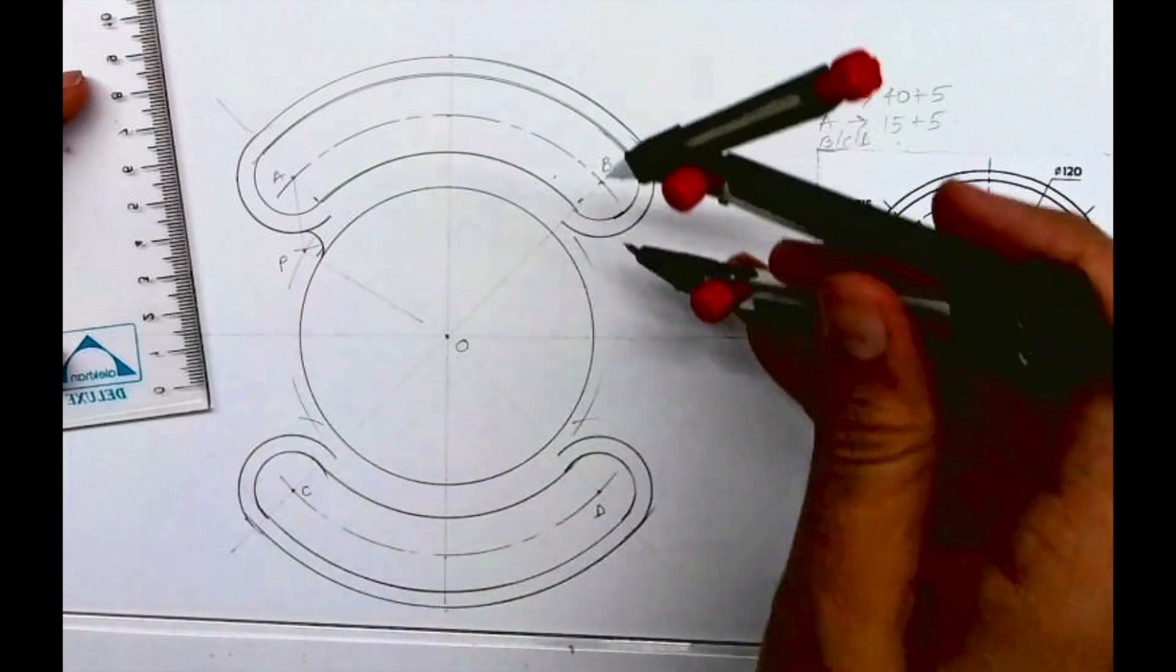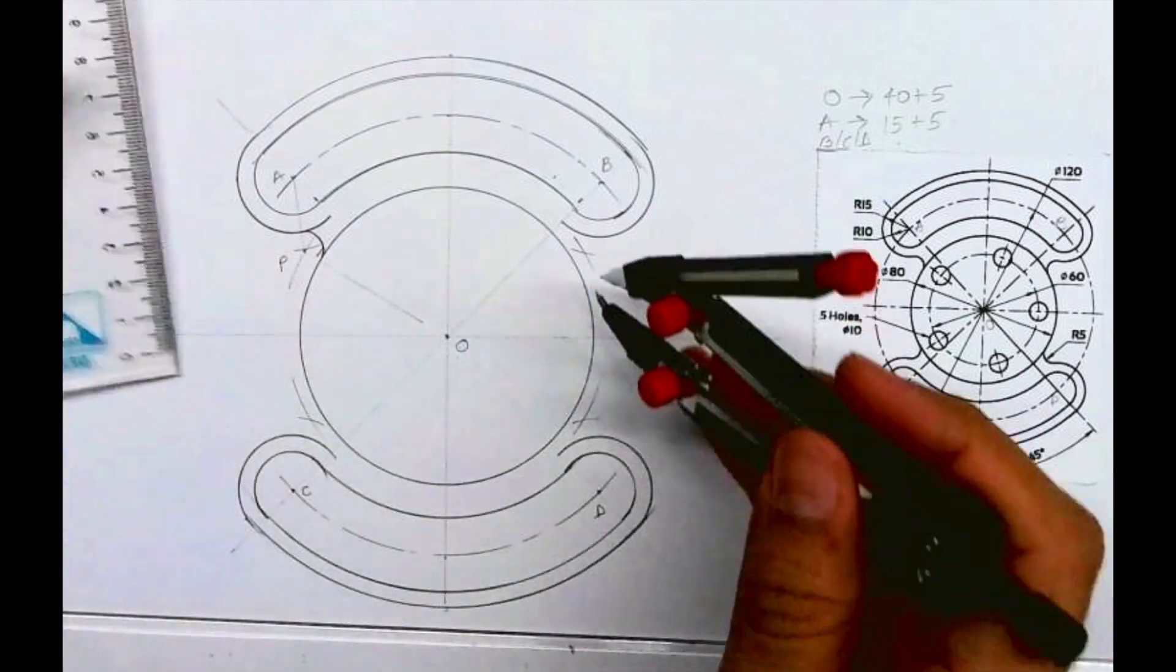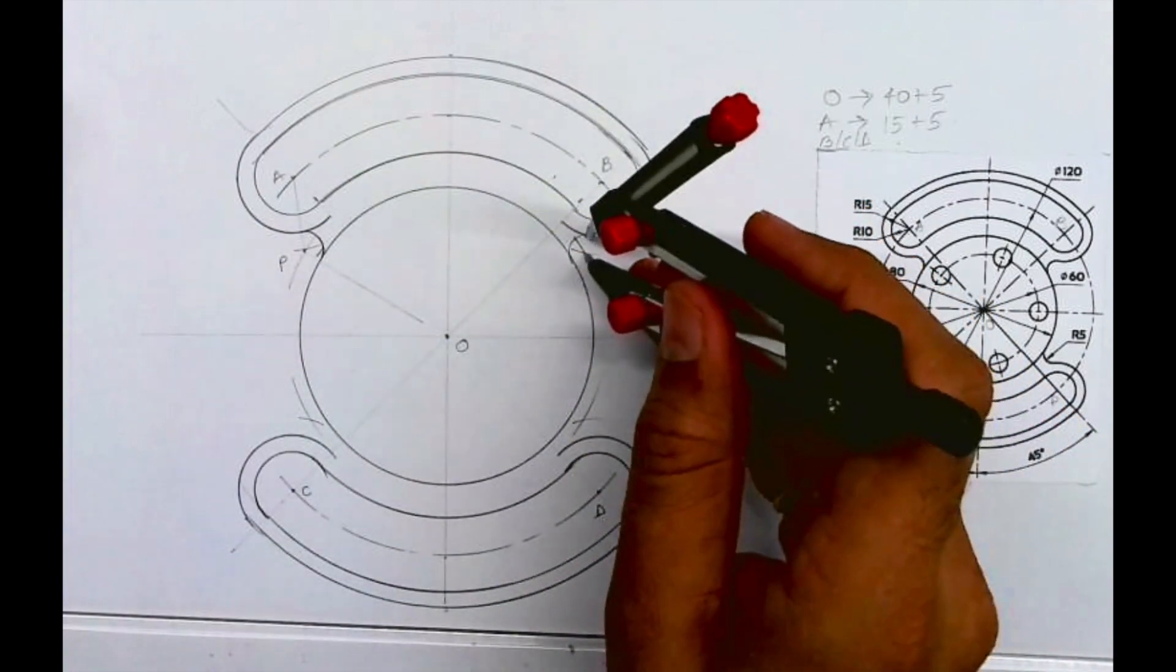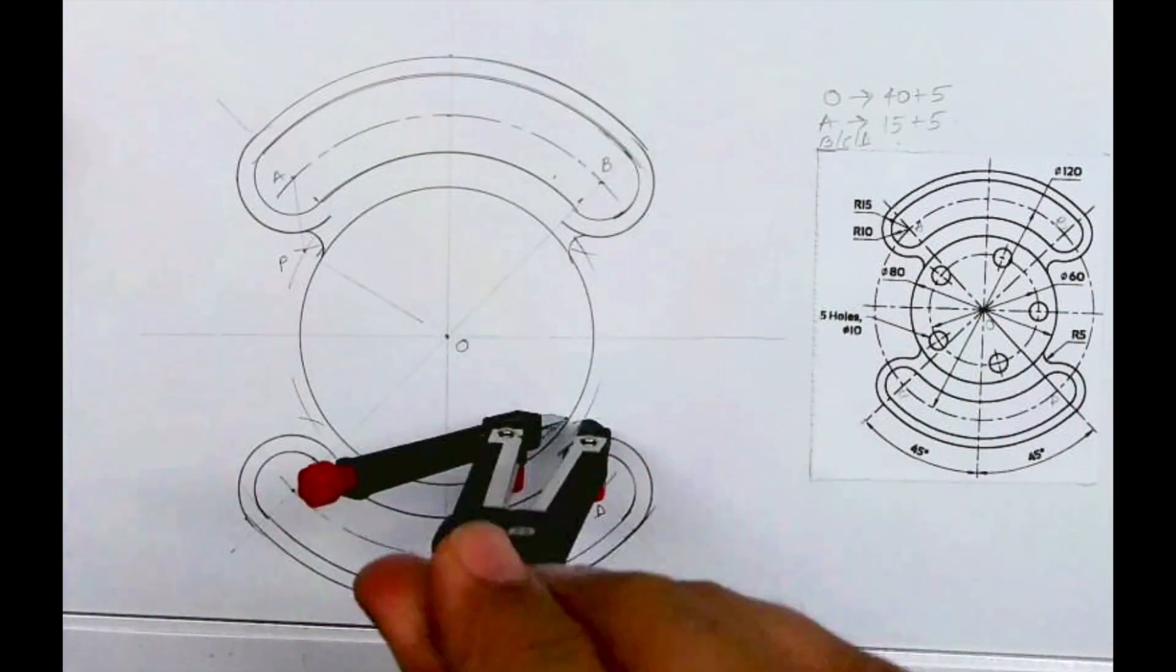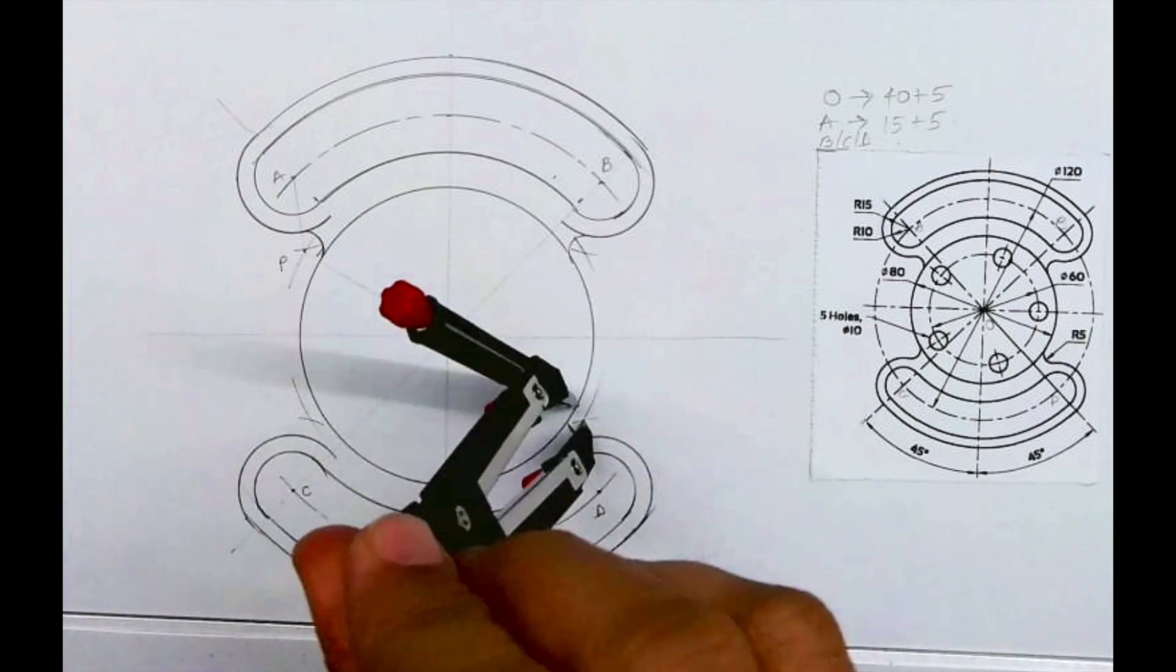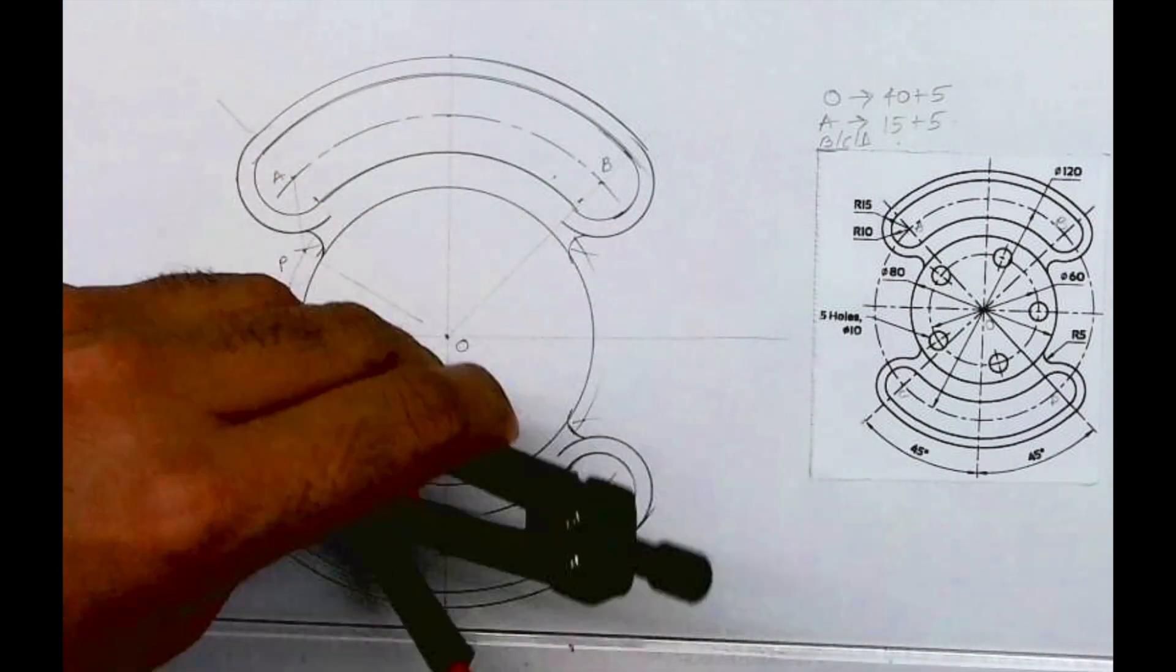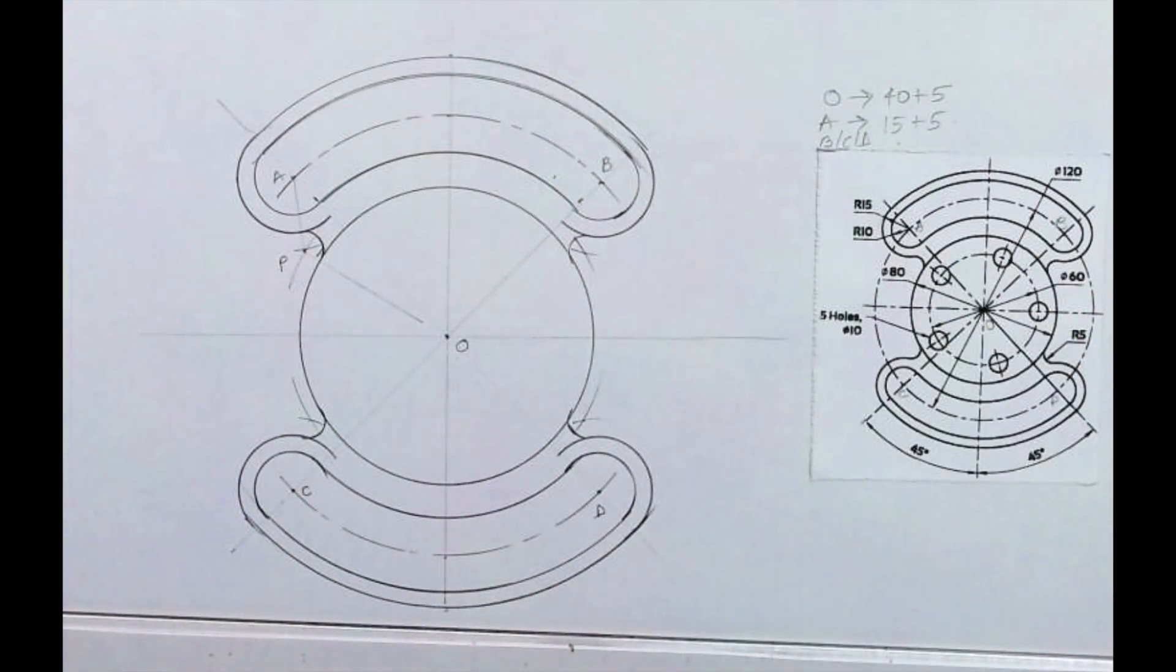I can do the same thing from B, C, and D. I can cut 20 and from O 45. Wherever they intersect, from all those points we can draw radius 5. So we are done with this curve. Now we need to draw five circles.